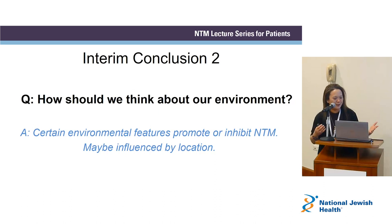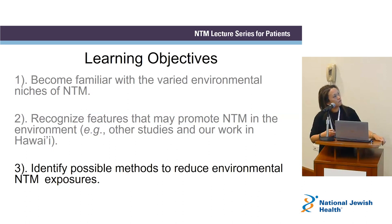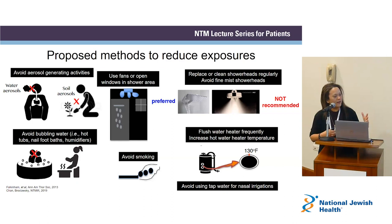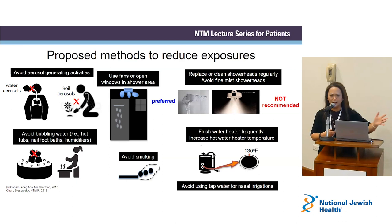How should we think about our environments? Based on some of these features — could it be the iron, the metals — certain environmental factors could be promoting or inhibiting NTM, and it varies by location. Now, number three, probably the most daunting: how to identify possible methods to reduce NTM exposures. What Dr. Falkenham has said through the years still holds true: avoid aerosol-generating activities, open windows in your shower, use large-drop showerheads instead of misters, clean showerheads, avoid bubbling water, flush the water heater, don't allow stagnant water in your homes, flush frequently, and raise water temperature.